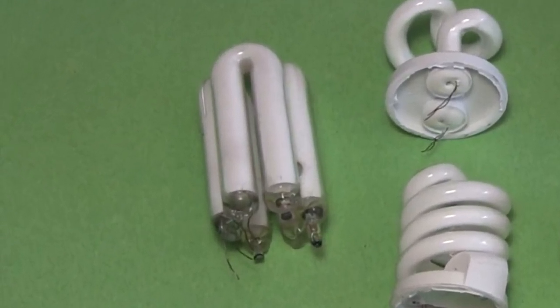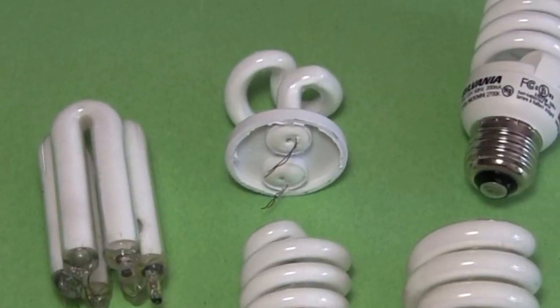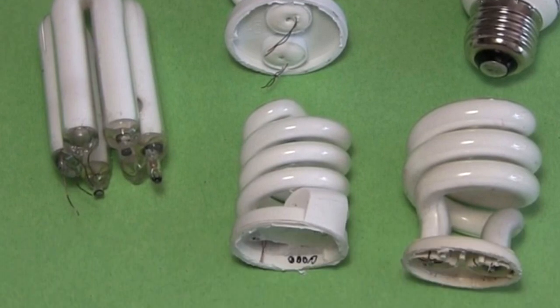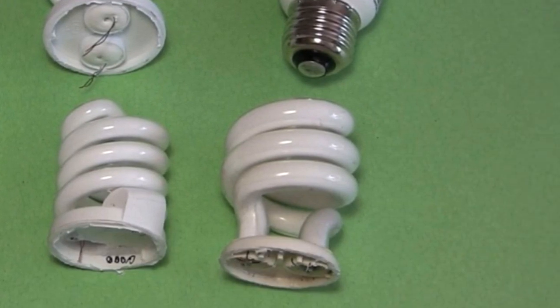And of course you'll need a tube from a compact fluorescent light bulb. You can start with a working light or one that no longer works. The tube is usually still okay either way.